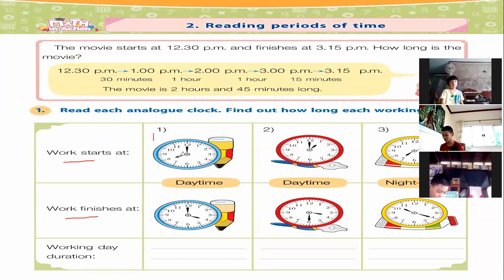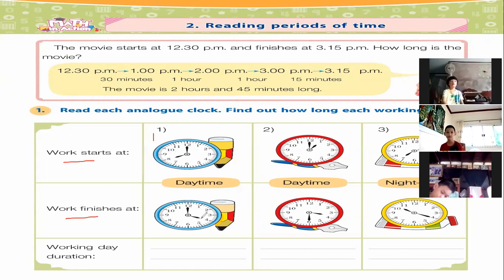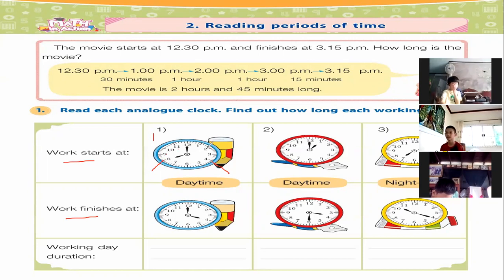Number one: the work starting time is eight o'clock. The finishing time is four PM. How many hours is the working duration? Let's count from eight o'clock until four PM: one, two, three, four, five, six, seven, eight hours. So the total duration is eight hours — from eight AM to four PM.